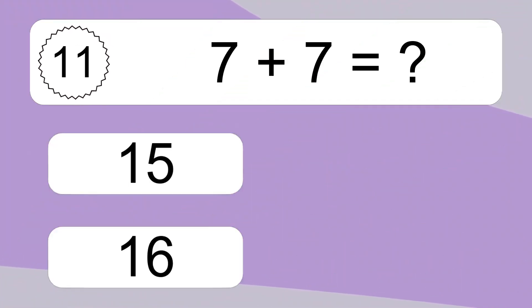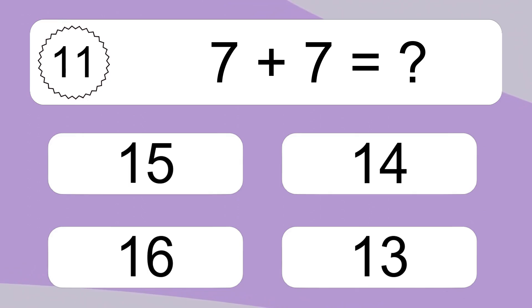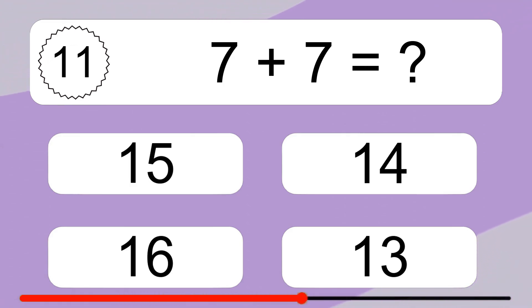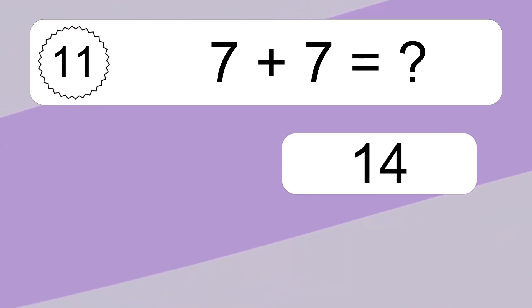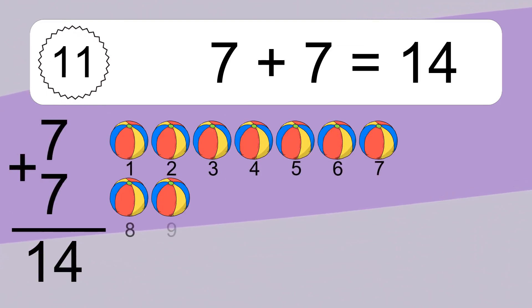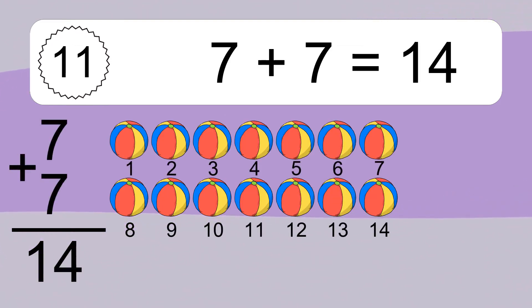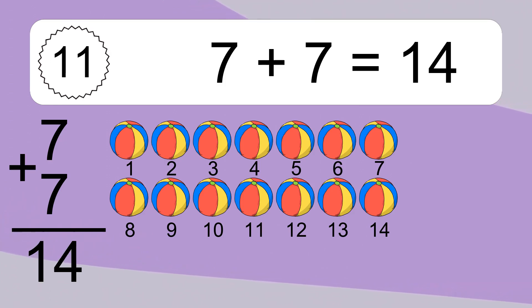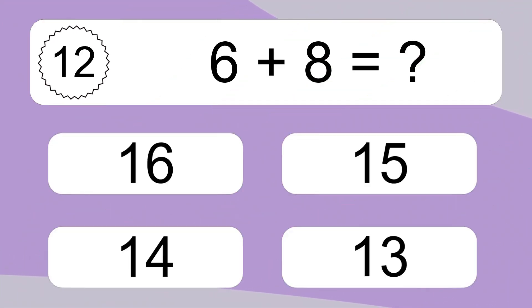7 plus 7 equals what? 7 plus 7 equals 14. Let's count it: 1, 2, 3, 4, 5, 6, 7, 8, 9, 10, 11, 12, 13, 14.